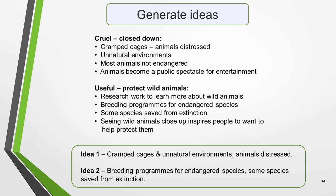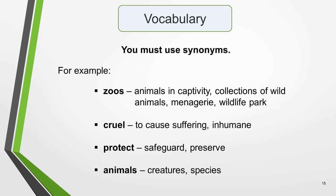For the first idea I've chosen: cramped cages, unnatural environments and distressed animals. For the second idea: breeding programs for endangered species, with some species saved from extinction. In an IELTS essay it's important to say the same thing in different ways, either by paraphrasing or using synonyms. During the planning stage, quickly jot down synonyms of key words — for example, for 'zoos' we could use 'animals in captivity,' 'collections of wild animals,' 'menagerie,' or 'wildlife park'; for 'cruel': 'cause suffering' or 'inhumane'; for 'protection': 'safeguard' or 'preserve'; and for 'animals': 'creatures' or 'species.'